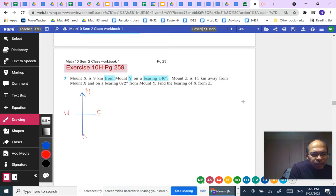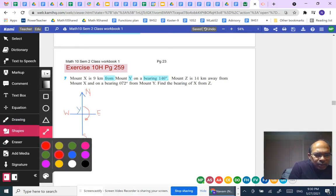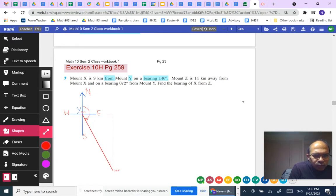The central point here is what we can consider to be Y. X is nine kilometers from Y on a bearing 146 from Y. So we're going to try to estimate 146 starting from the north direction like this. Perhaps up to about this point. Now from that point, let's draw a line that represents the bearing from Y to X.